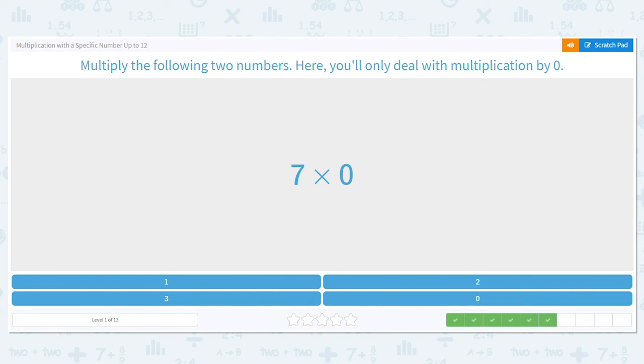Any number times zero equals zero. How about zero times one?